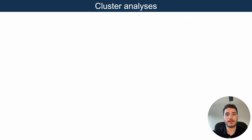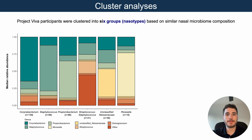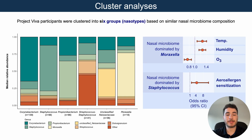Regarding the cluster analysis, we identified that study participants could be clustered into six different groups or nasotypes, shown in this taxabar plot on the left. After doing a pairwise comparison among all clusters, we observed that participants whose nasal microbiome was dominated by Moraxella were exposed to higher temperature and humidity and lower levels of O3 compared to all other participants.